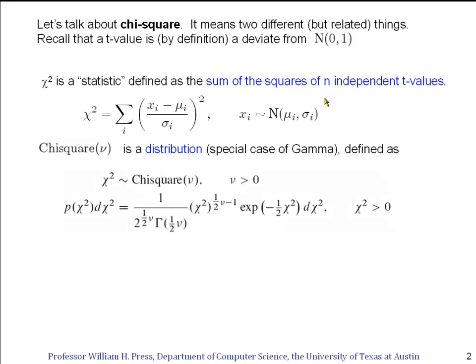The second meaning of the term chi-square we've seen before. It's simply the name of a standard univariate, that is one-dimensional, probability distribution. We say a value χ² is drawn from the distribution chi-square, which has a parameter ν > 0, if that value has this probability density.